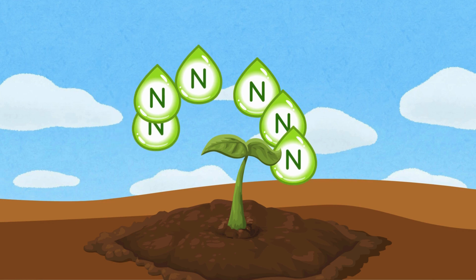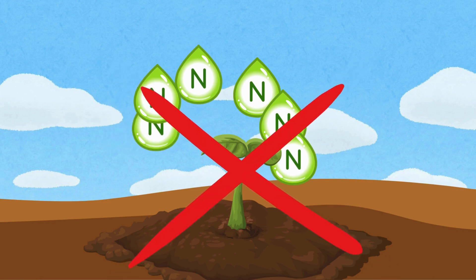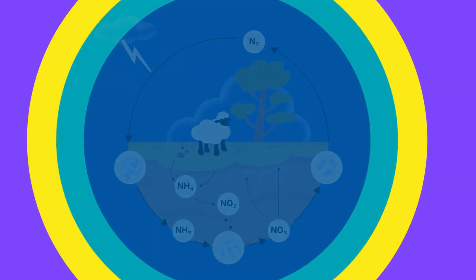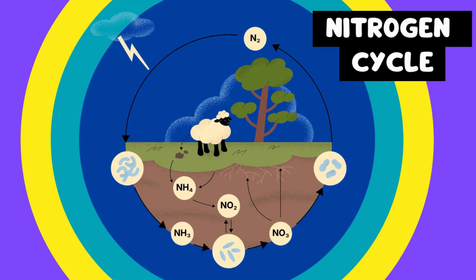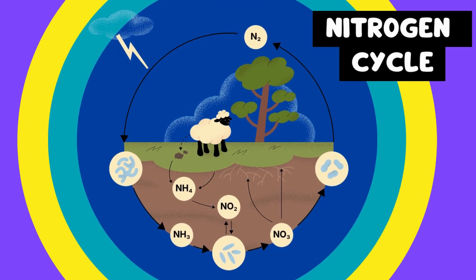But wait, we can't use nitrogen gas directly from the air. Plants need special bacteria to turn it into a form they can use to grow. That's called the nitrogen cycle, and it keeps life going on Earth.